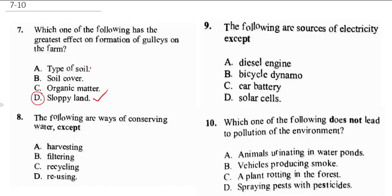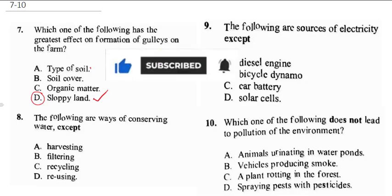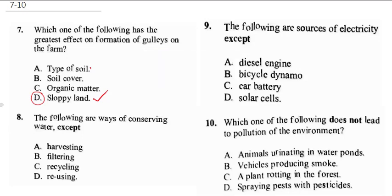Question 8: the following are ways of conserving water. You can conserve water by recycling, by reusing, and by harvesting — in order to harvest water, you take large storage drums and containers to store water. But filtering is not a method of conserving water. So the correct answer is B.